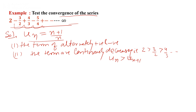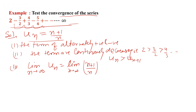Third condition: find the limit of the nth term. Limit as n tends to infinity of u(n) = (n+1)/n. Taking n common in the numerator: limit n→∞ of (1 + 1/n)/1 = 1, which is not equal to 0.